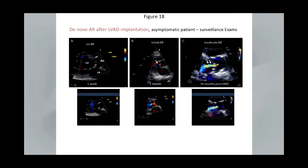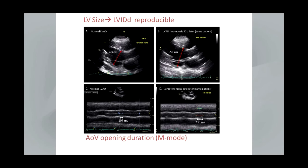This is an illustration of de novo aortic valve regurgitation. The patient had essentially no aortic regurgitation at implant date, but a month later there was some trivial AR, and at 14 months he had actually developed significant aortic regurgitation having had none previously. When looking at the post-implant echo, LV size measurement is important — this is a patient that had an increase in left ventricular size after being at a pump speed prolonged for a certain period of time. The increased aortic valve opening duration by M-mode is pathognomonic of a patient that had developed internal pump thrombosis.